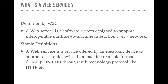By the definition of W3C, the World Wide Web Consortium — a council which maintains and governs standards — a web service is a software system designed to support interoperable machine-to-machine interactions over a network. In even simpler terms, a web service is a service offered by an electronic device to another electronic device in a machine-readable format like XML, JSON, or EDI formats through application protocols like HTTP. If you think this definition is still confusing, by the end of this video you will have a clearer idea.